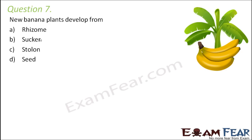Question number 7: New banana plants develop from — rhizome, suckers, stolon, or seed. Bananas are vegetatively propagated by suckers, which develop from buds on the underground rhizome. There might be confusion since bananas have both rhizome and sucker, but the question asks where new plants directly develop from. Vegetative propagation happens through suckers; if sucker were not an option, rhizome would be best, but since sucker is available, sucker is correct.